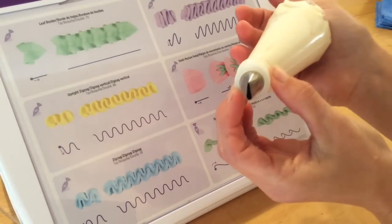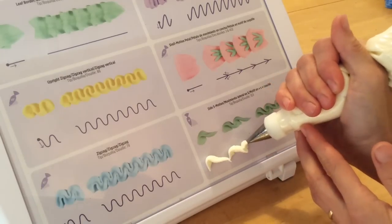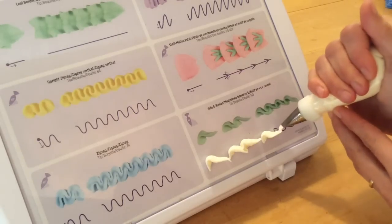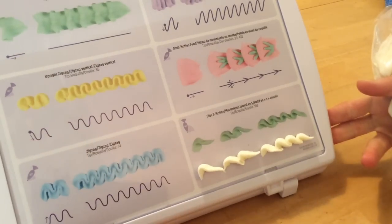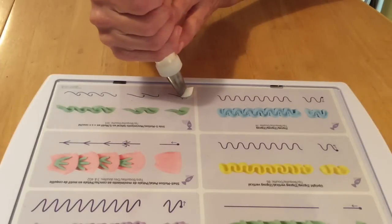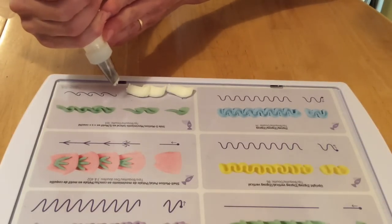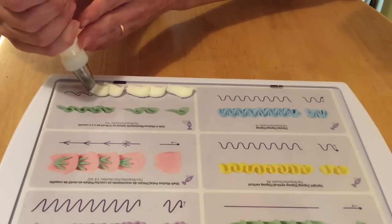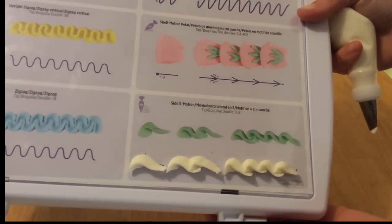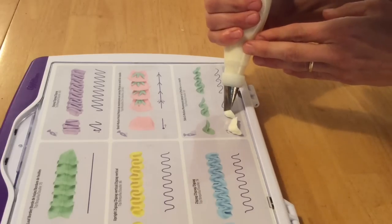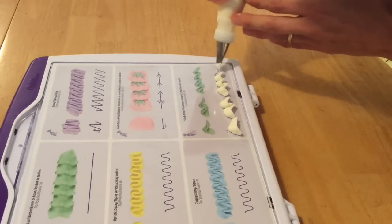The last technique I'm going to show you is using a petal tip number 103 to pipe a side S motion. Notice that I have the wide end of the tip pointing down towards the surface of the practice board. The narrow end is pointing up, and I'm simply piping an S motion that overlaps a little bit. This is a technique I had not seen or tried before doing this practice board video. I'm not entirely sure I like it. I'm not even sure what sort of application it would have, but since I have a number 103, I figured I might as well show it to you.